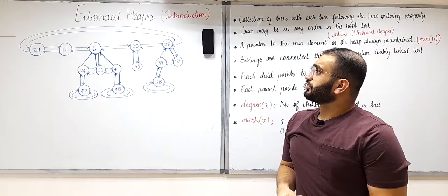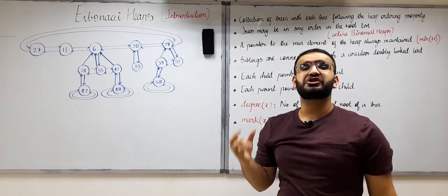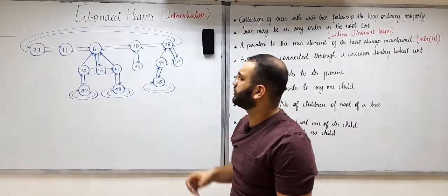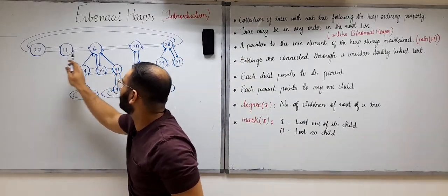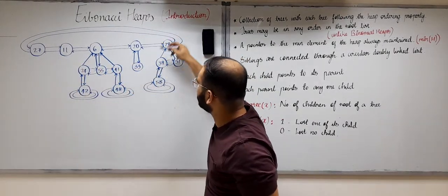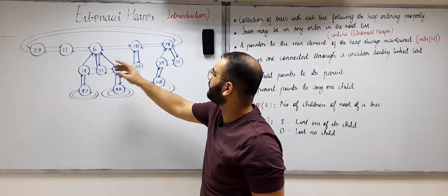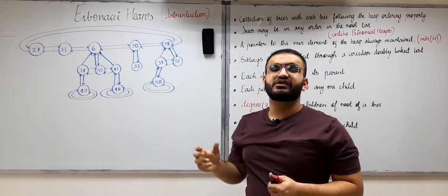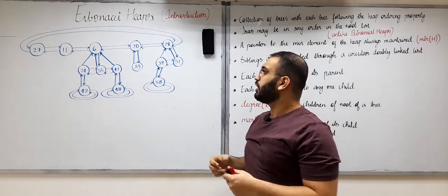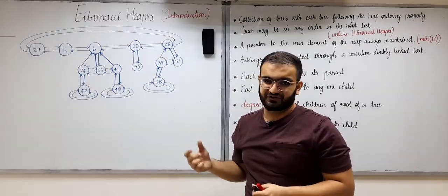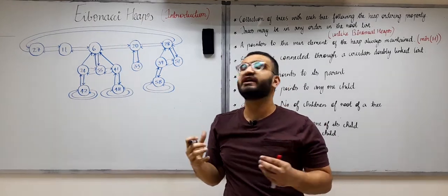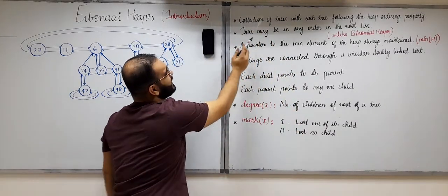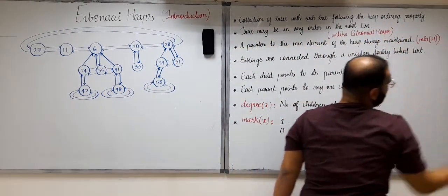So what is a Fibonacci heap? Basically, a Fibonacci heap is a collection of trees — not a collection of binomial trees, just a collection of trees. For example, we have five trees here, and these trees follow the min-heap ordering property. All the trees are separately following the min-heap ordering property. So basically, a Fibonacci heap is a collection of trees with each following the heap ordering property.